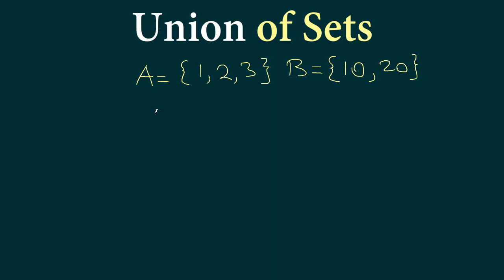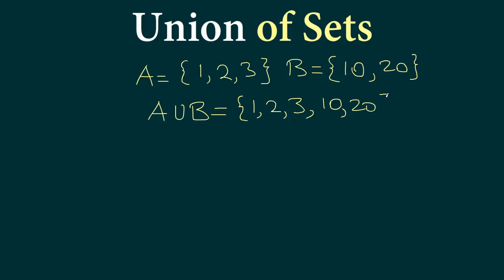So A union B will simply be a set containing all elements of A, which is 1, 2 and 3, and then all elements of B, which is 10 and 20. So A union B is {1, 2, 3, 10, 20}.